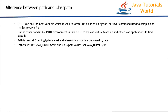Now let's see the differences between PATH and CLASSPATH. PATH is used to locate JDK binaries like javac and java, which are used to compile and run Java programs. CLASSPATH is used by the Java Virtual Machine and other Java applications to find class libraries. Second difference: PATH is used at the operating system level, whereas CLASSPATH is used only by Java. Third difference: the value for PATH is JAVA_HOME/bin, whereas the value for CLASSPATH is JAVA_HOME/lib.